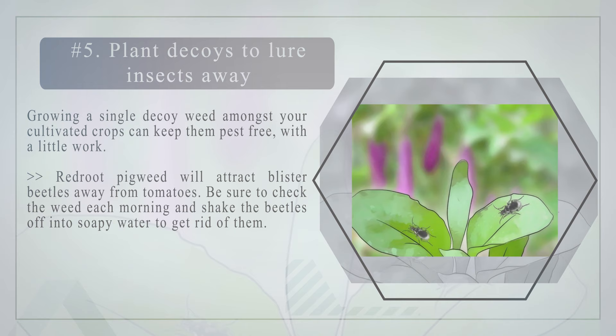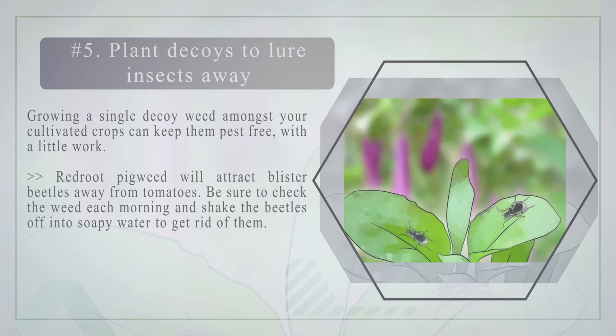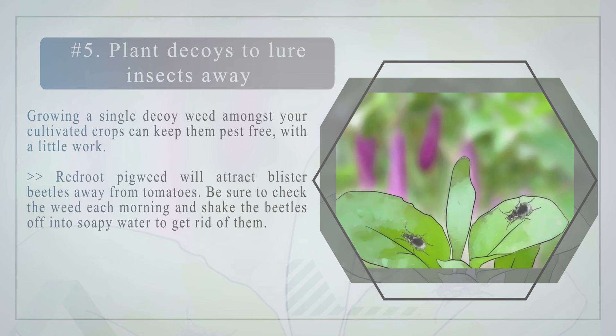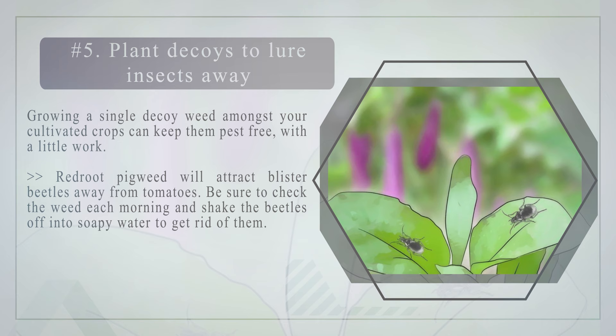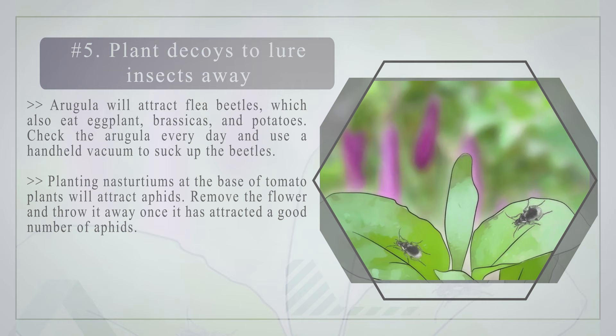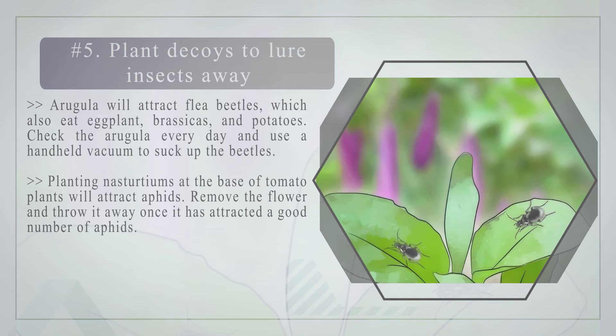Number five: plant decoys to lure insects away. Growing a single decoy weed amongst your cultivated crops can keep them pest-free with a little work. Redroot pigweed will attract blister beetles away from tomatoes — check the weed each morning and shake the beetles off into soapy water. Arugula will attract flea beetles, which also eat eggplant, brassicas, and potatoes — check it every day and use a handheld vacuum to suck up the beetles. Planting nasturtiums at the base of tomato plants will attract aphids — remove the flower and throw it away once it has attracted a good number of aphids.